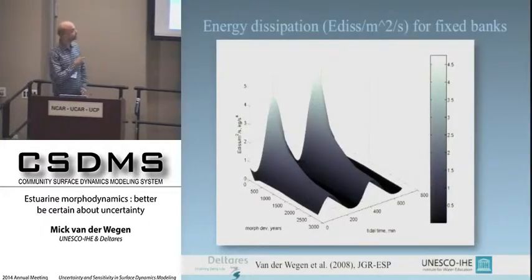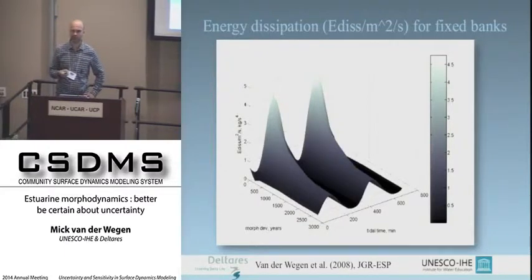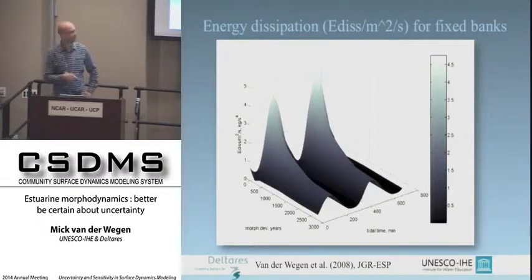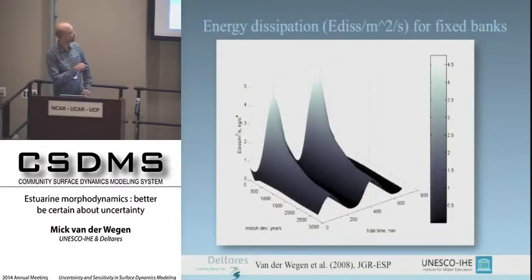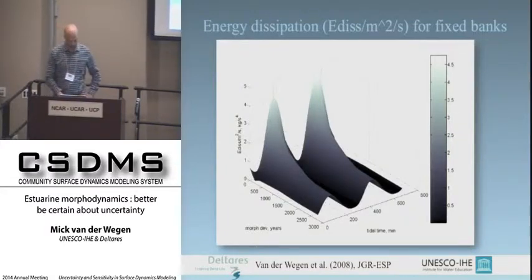If you translate the model results in a different way, you can see here the translation into energy dissipation levels. In the beginning, you have a lot of energy dissipation — meaning high shear stresses, high sediment transports, a large amount of sediment being transported over ebb and flood. Over the timescale of about 3,000 years, the energy dissipation levels drop considerably, and they become more symmetrically distributed over ebb and flood after 3,000 years — so there's less morphodynamic activity and a trend towards equilibrium.